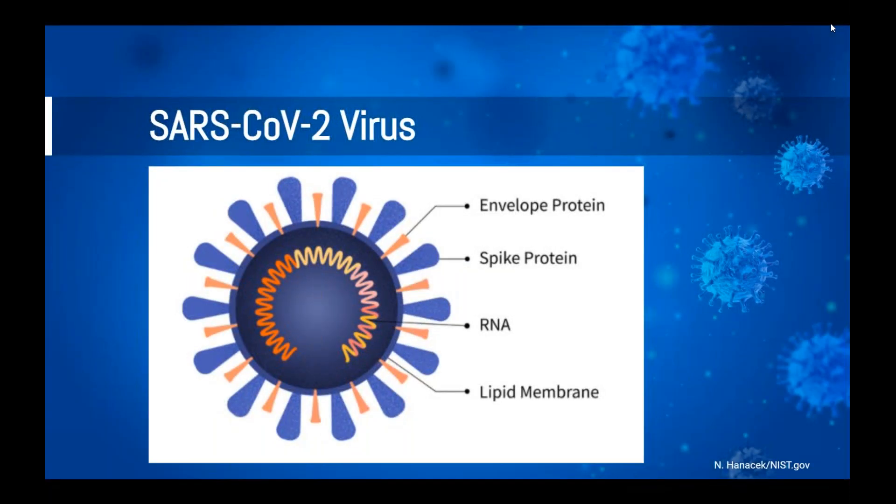Here we see the basic structure of the SARS-CoV-2 virus, including the very important outer spike protein in blue. This outer spike protein lets the virus attach to a human cell and infect it. We also see the coil or the string of RNA in the middle, which is the basic code or instructions that the virus carries with it into a human cell.